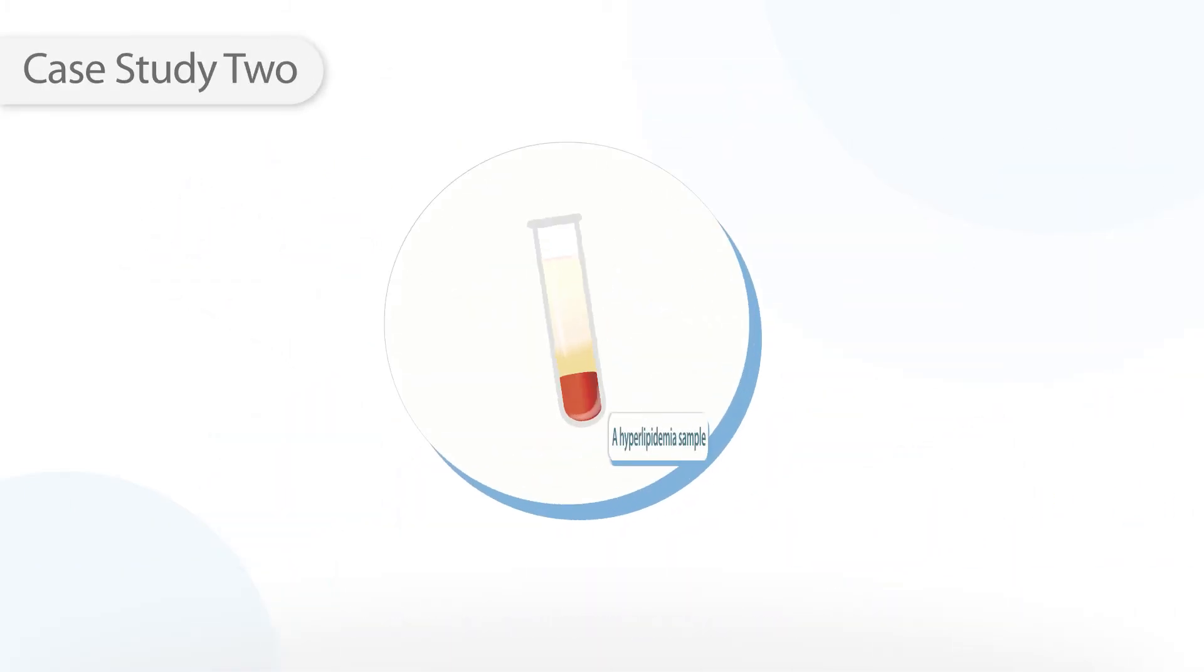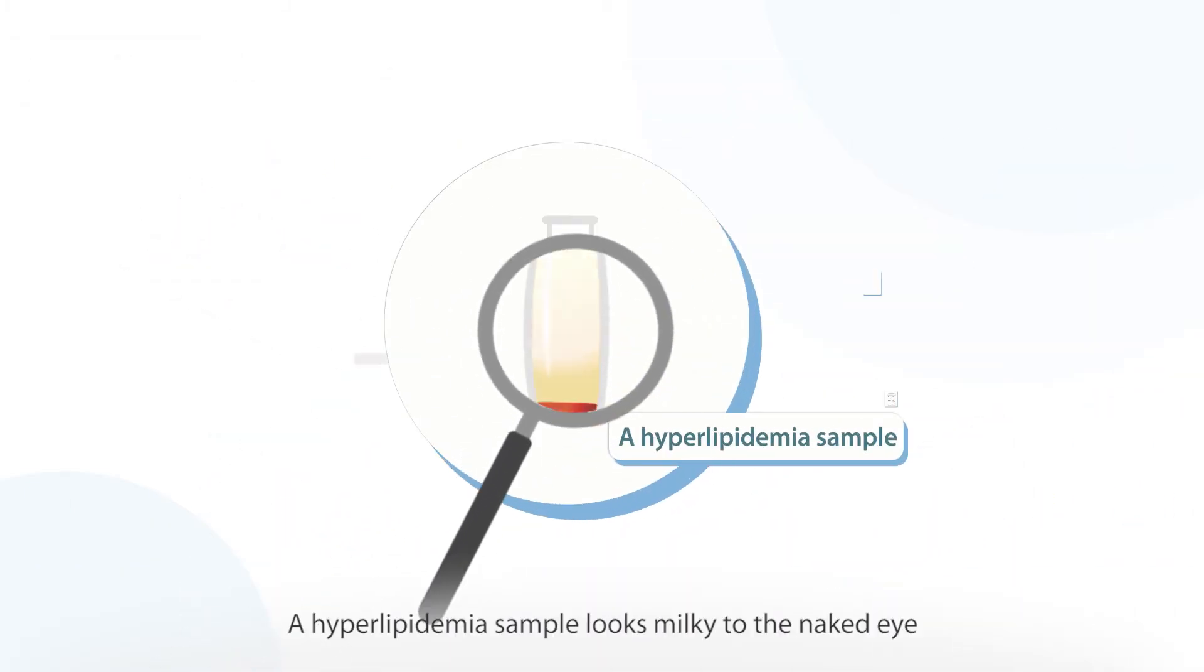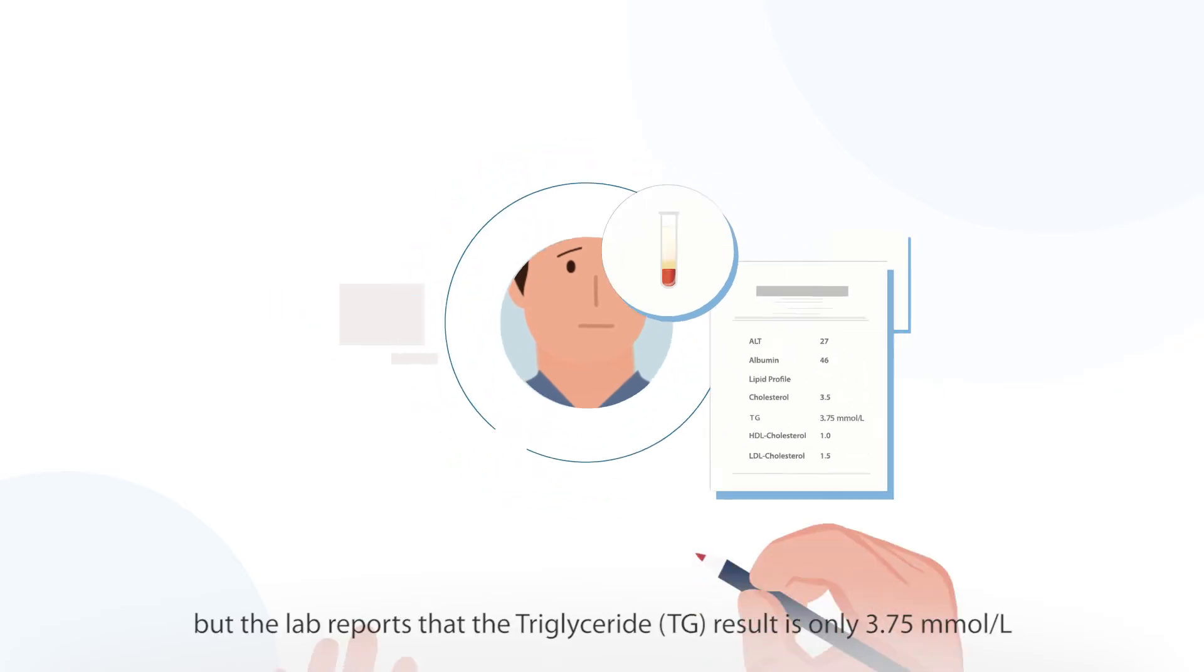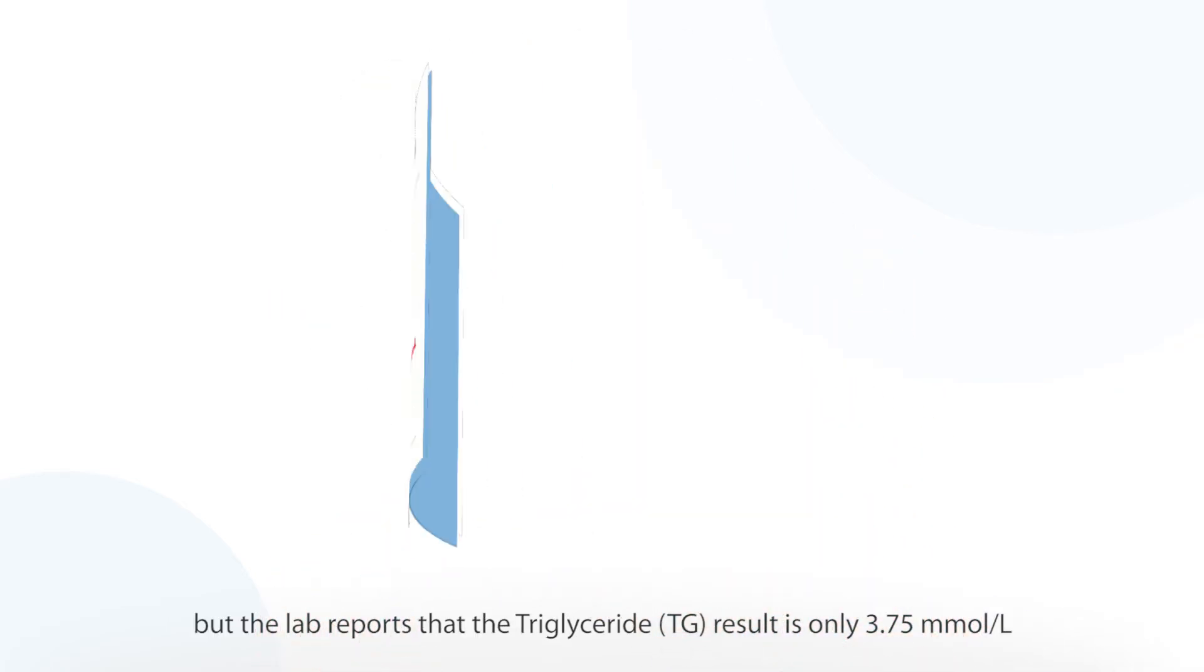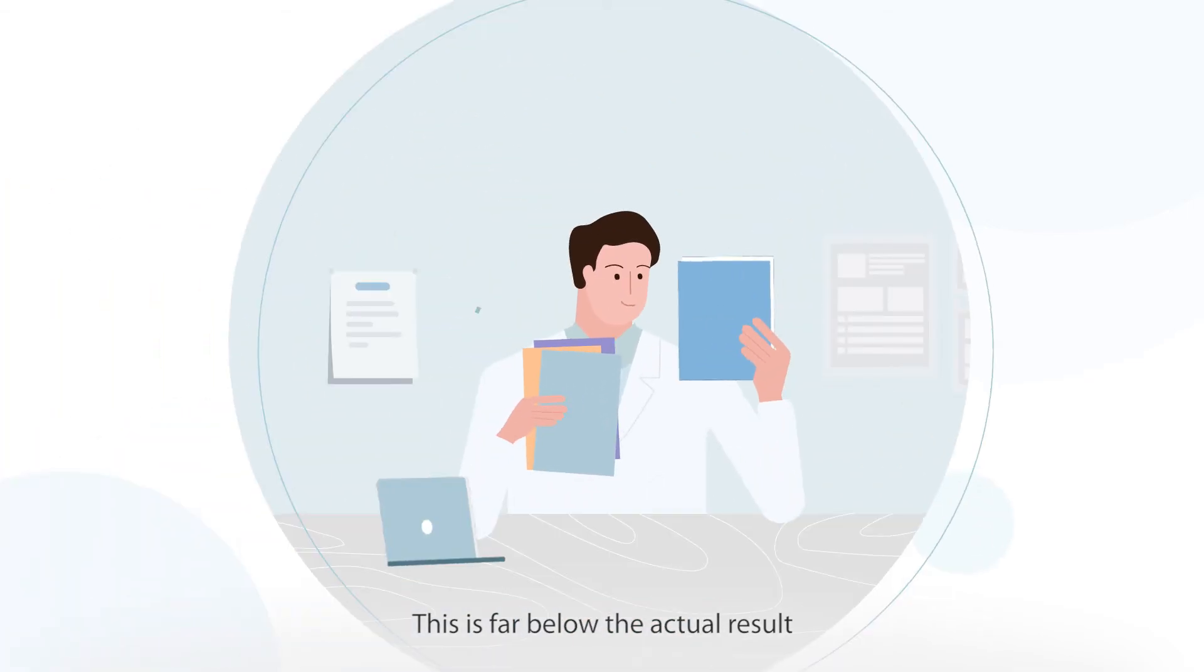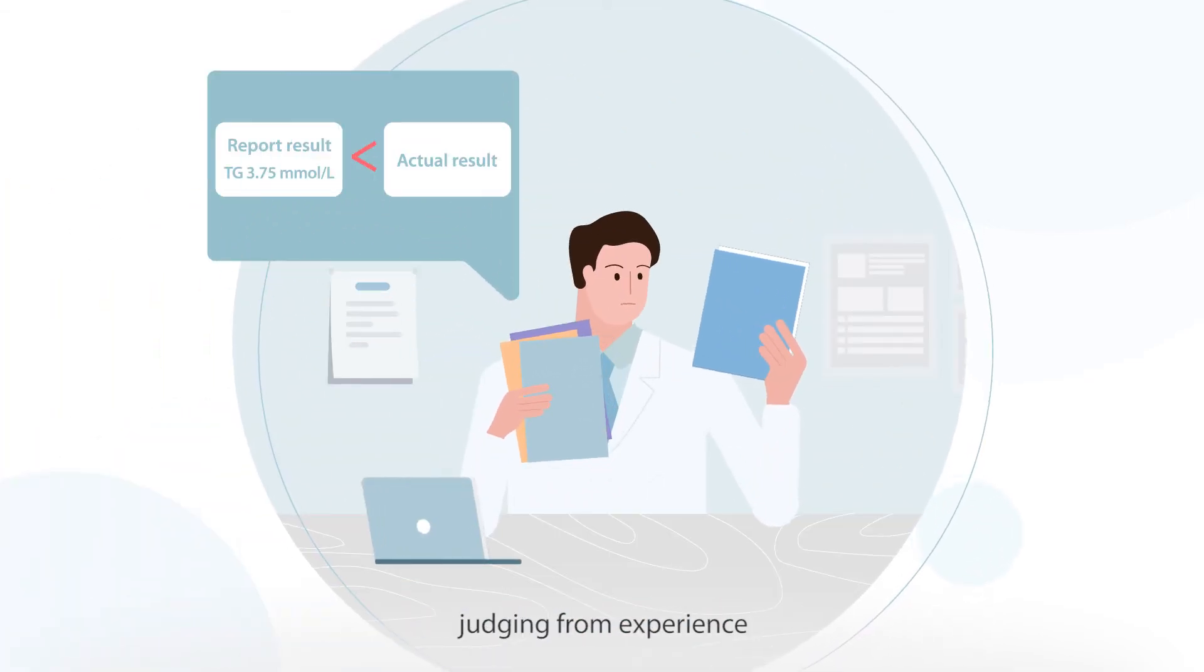Case study 2. A hyperlipidemia sample looks milky to the naked eye but the lab reports that the triglyceride result is only 3.75 millimole per liter. This is far below the actual result judging from experience.